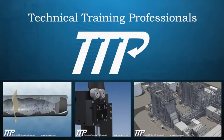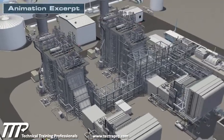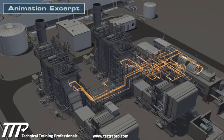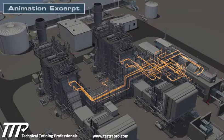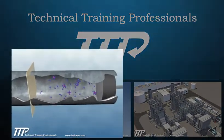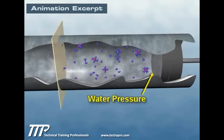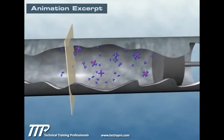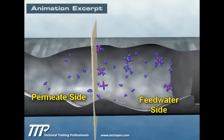TTP specializes in visual presentation of technical information — whether explaining an entire power plant layout, where the steam turbine receives steam from the heat recovery steam generators to produce power, which increases the overall efficiency of the facility, or clearly illustrating chemistry fundamentals, such as how RO basically uses water pressure produced by a pump to push water molecules through a specialized plastic filter, while leaving hydrated ions behind.